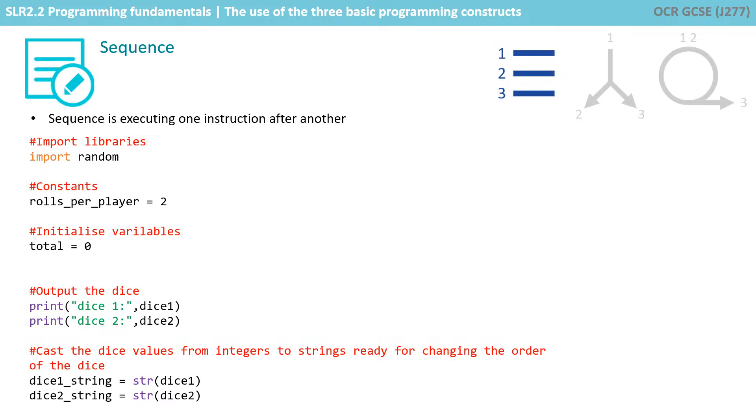The first of the three programming constructs and the most simple and straightforward is sequence. Sequence literally means executing one instruction after another. By default, if your program isn't doing selection or iteration or anything else special, it is always working in sequence. That's simply executing one line and then moving on and executing the next line and then the next and so on.